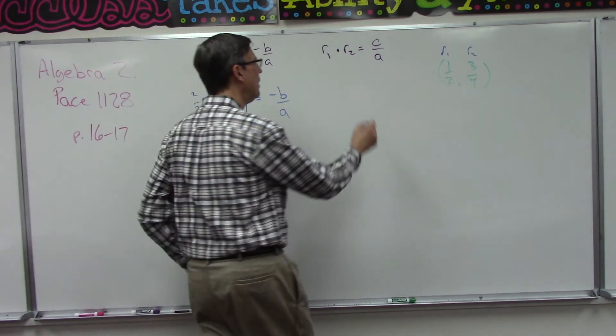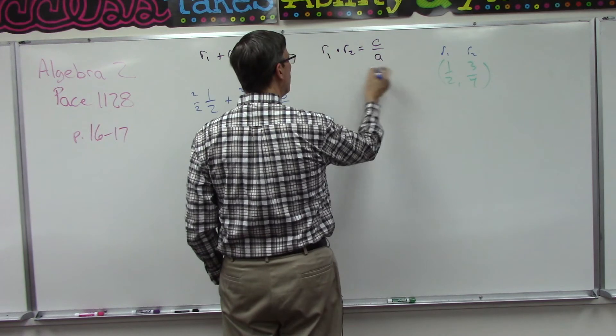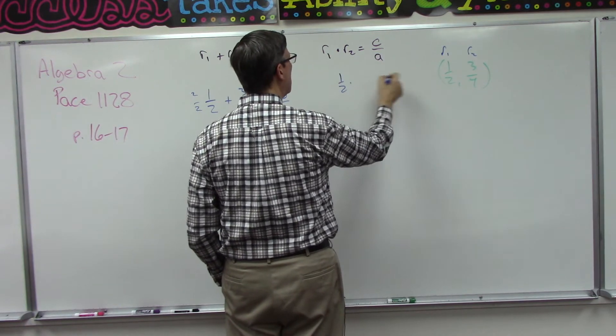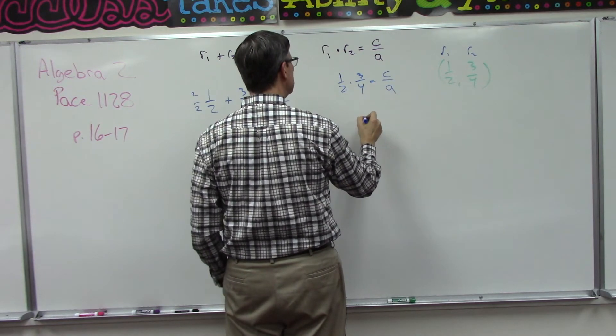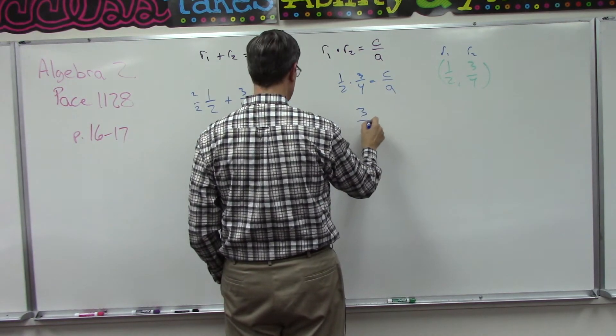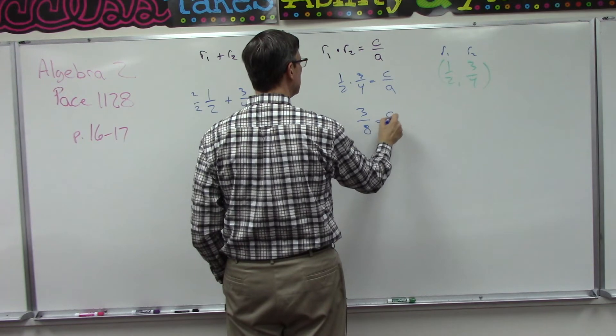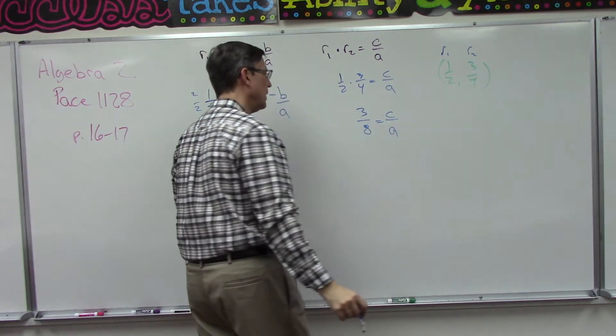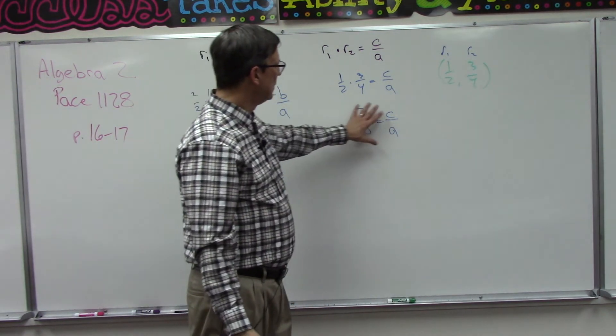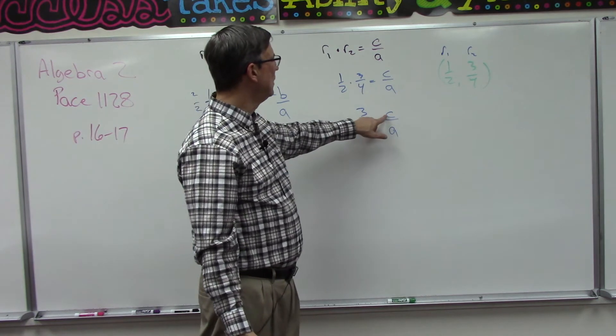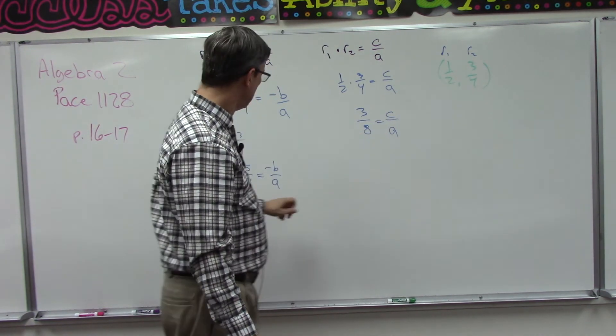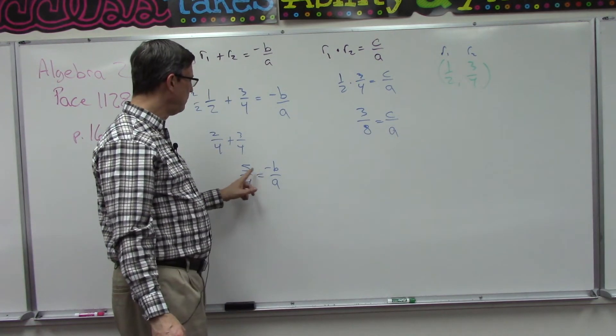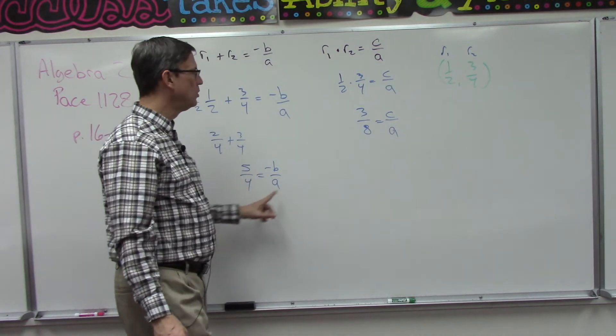But now we're going to multiply: one half times three fourths has to equal c over a. Well, what does that give us? Three eighths equals c over a. Now just looking at this, that should mean that c is three and a is eight. But over here it says negative b is five and a is four, so I have two different answers for a.